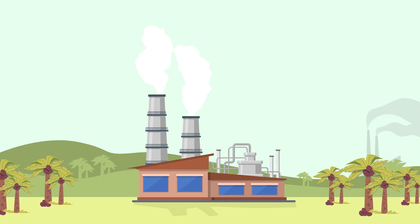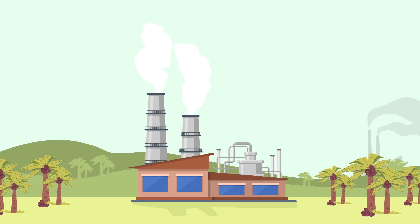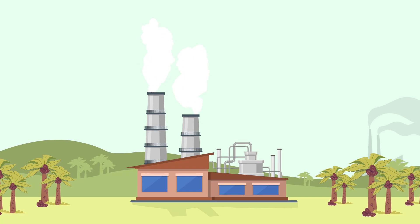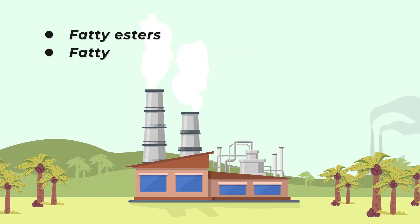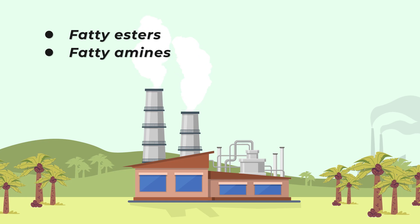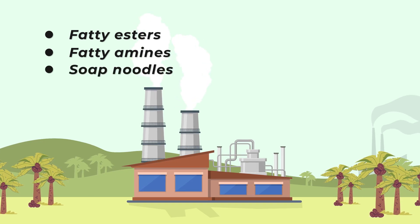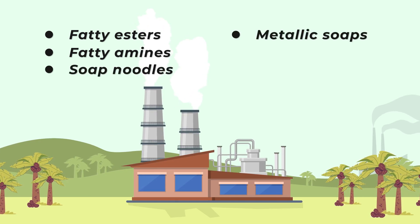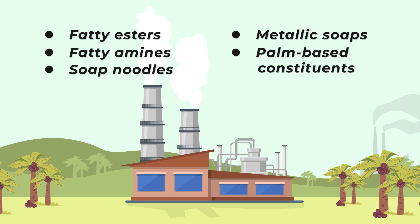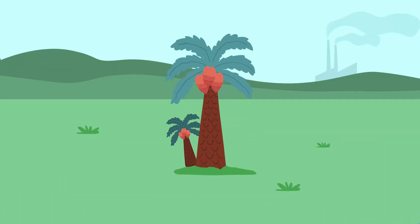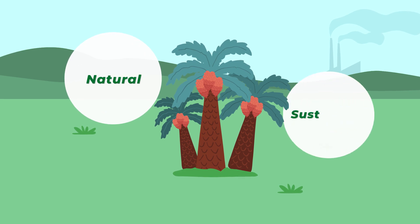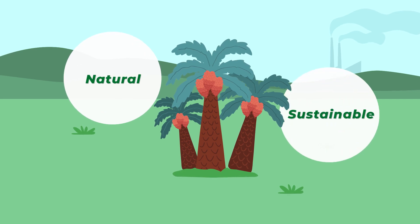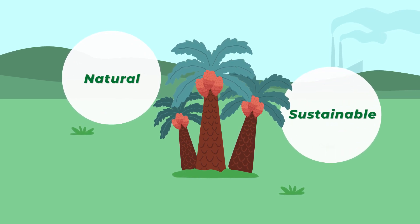The Malaysian palm oil industry has diversified into producing oleochemical derivatives such as fatty esters, fatty amines, soap noodles, metallic soaps, and palm-based constituents. Being of plant origin, palm-based oleochemicals are natural and sustainable, thus promoting the development of green chemistry.